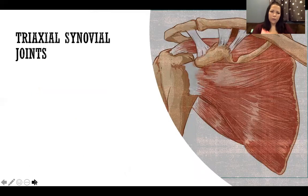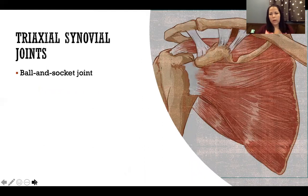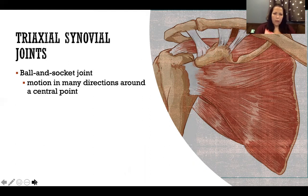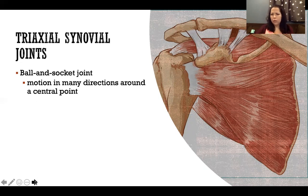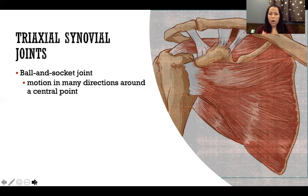Triaxial joints allow motion in all three planes. Ball-and-socket joints — we only have two in the body: the glenohumeral joint of the shoulder and the acetabulofemoral joint of the hip — have the greatest range of motion of any joints. The glenohumeral typically has greater range of motion because the acetabulofemoral has a much deeper socket, which restricts motion but provides greater stability.